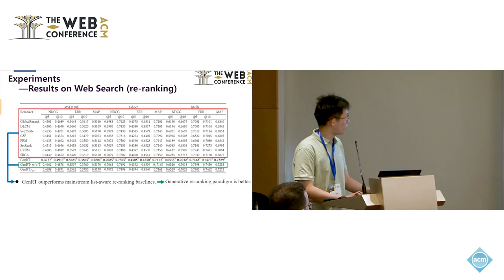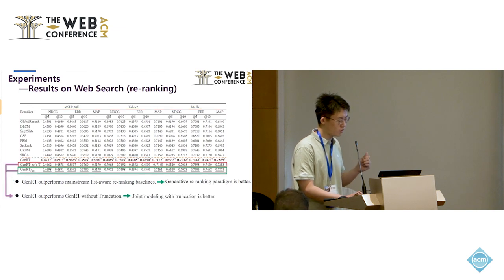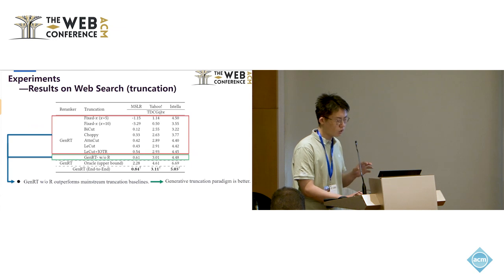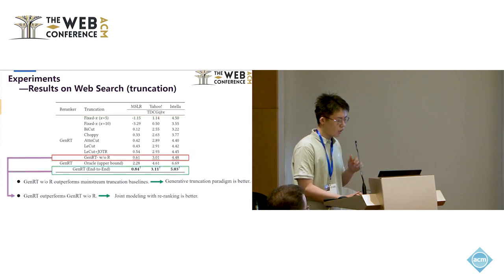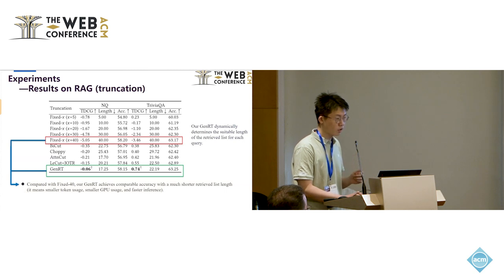This is our experimental results on re-ranking task of web search. First, JRT without truncation outperforms the mainstream list-wise re-ranking baselines showing that our generative re-ranking is better. And the JRT outperforms JRT without truncation showing that our joint modeling with truncation is better. This is our experimental results on the truncation of web search. First, JRT without re-ranking outperforms the mainstream truncation baselines showing that our generative truncation is better. And the JRT outperforms JRT without re-ranking showing that our joint modeling with re-ranking is better.